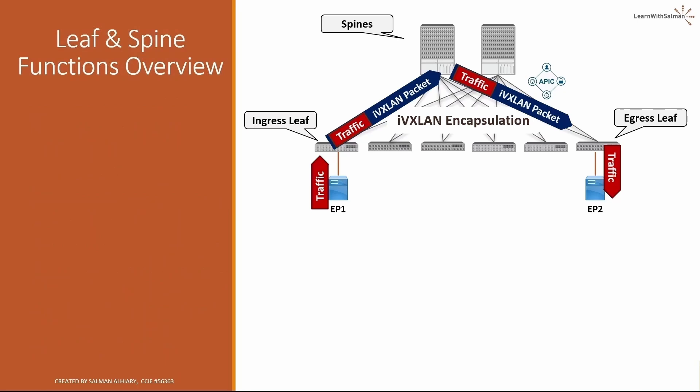Let's briefly talk about the functions of the ingress leaf, egress leaf, and spines. ACI ingress leaf functions include: deriving the source EPG via ingress traffic-to-EPG mapping; station lookup, to find how to reach the destination endpoint via local or global station tables; policy lookup, to check if the source and destination endpoints are allowed to communicate; and IVXLAN packet encapsulation, adding the outer header.